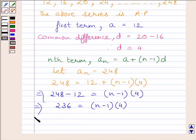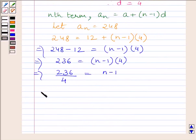Now dividing both sides by 4 we get 236 upon 4 is equal to N minus 1. Now we know 59 multiplied by 4 is equal to 236. So we get 59 is equal to N minus 1.